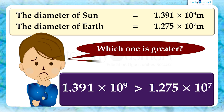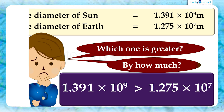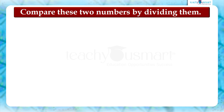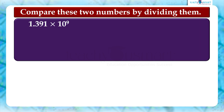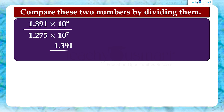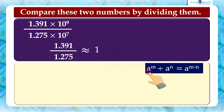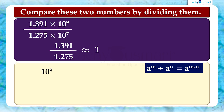The next question is, by how much is it greater? In this case, we should compare these two quantities by dividing them because they are very large numbers. That is, 1.391 multiplied by 10 raised to 9 divided by 1.275 multiplied by 10 raised to 7. Here, 1.391 divided by 1.275 is approximately equal to 1. And by the law of exponents, 10 raised to 9 divided by 10 raised to 7 equals 10 raised to 9 minus 7 equals 10 squared equals 100.